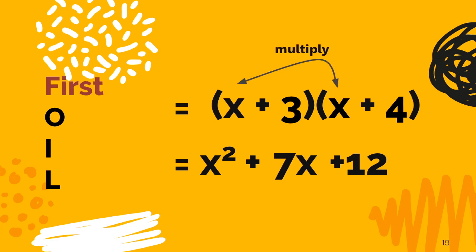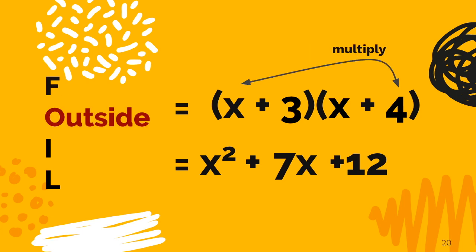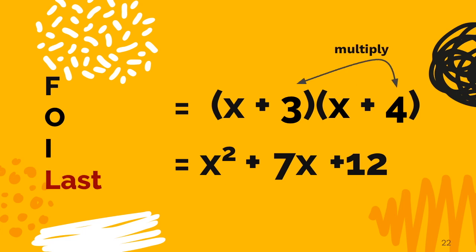So multiplying the first, the outside, the inside, and the last terms, we got the trinomial x squared plus 7x plus 12 after combining our middle terms.